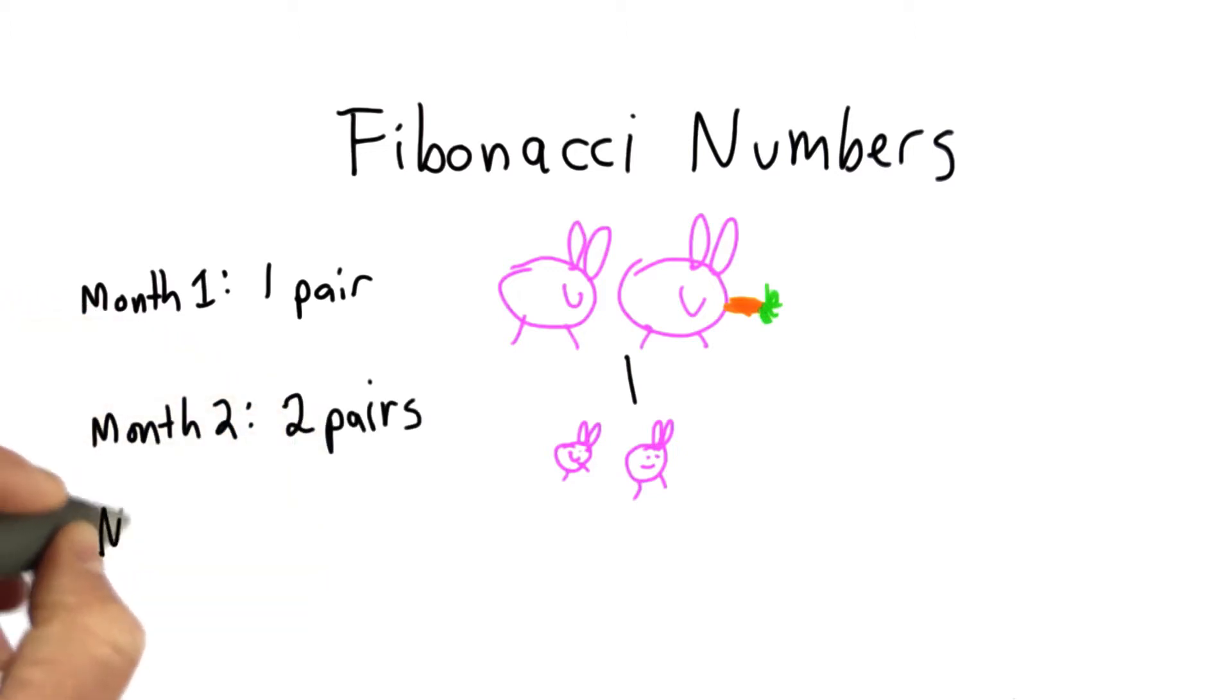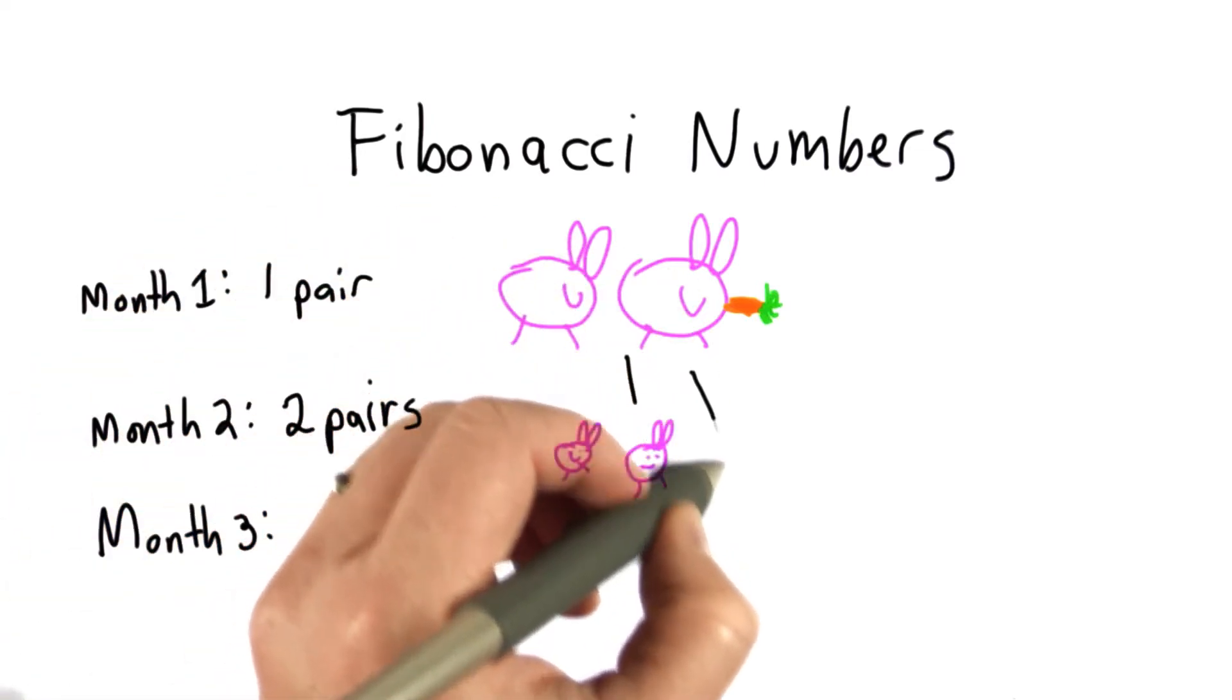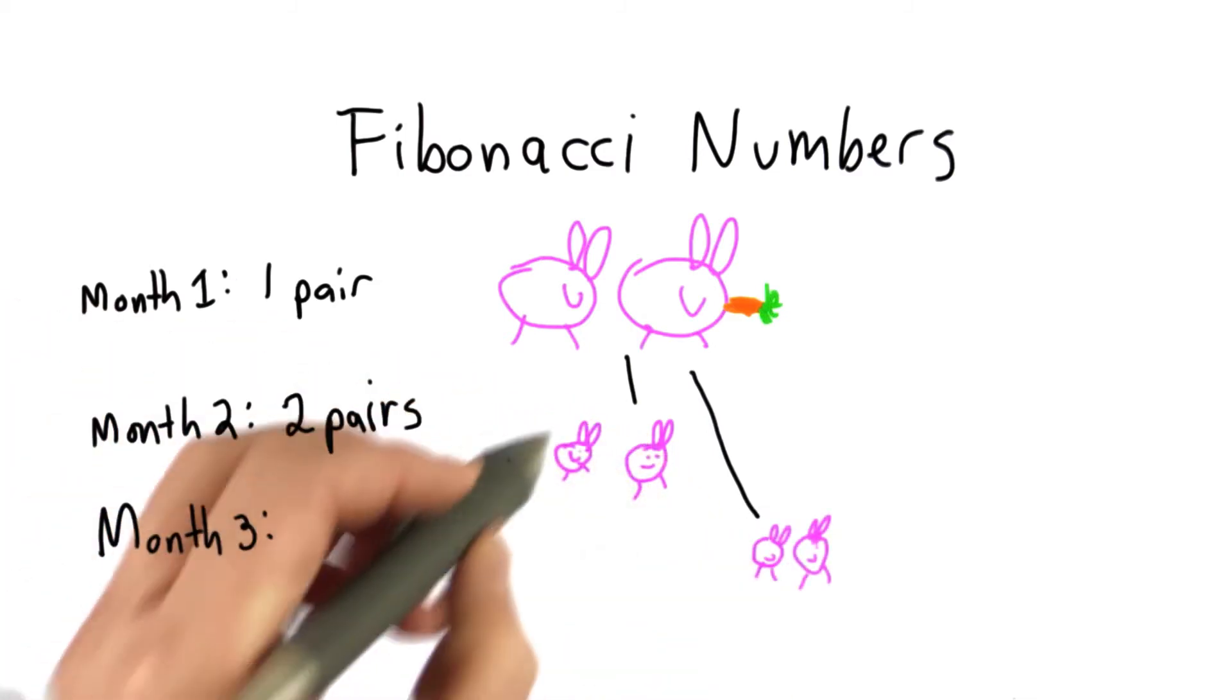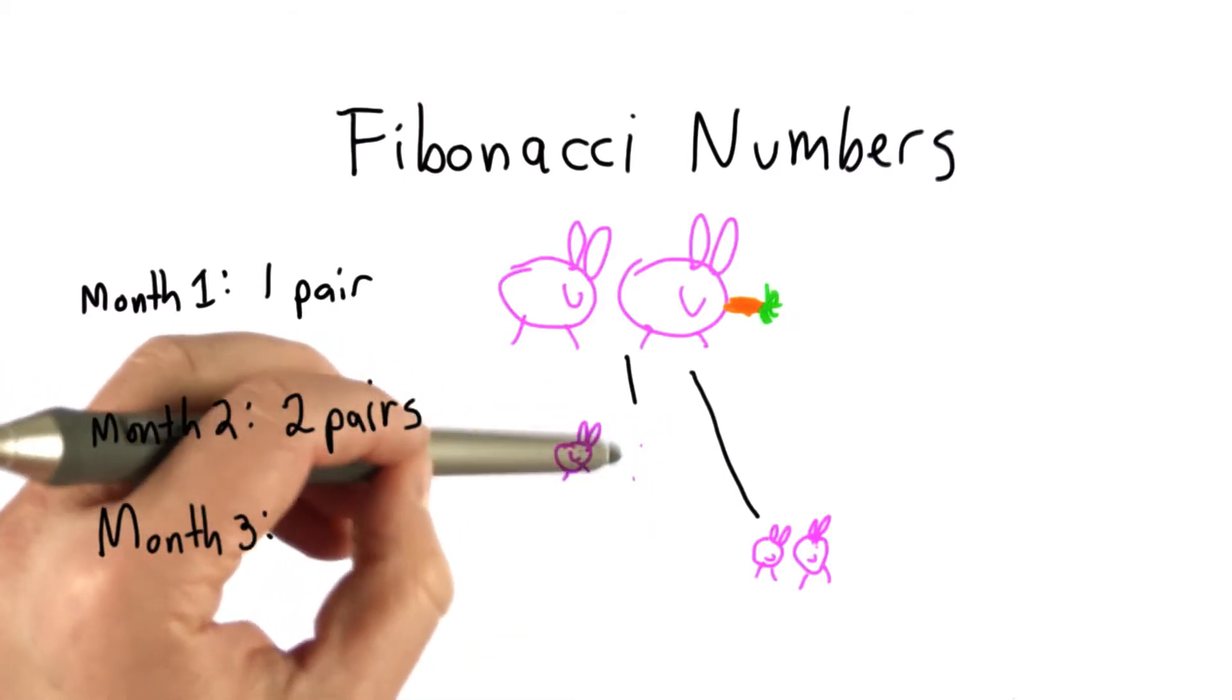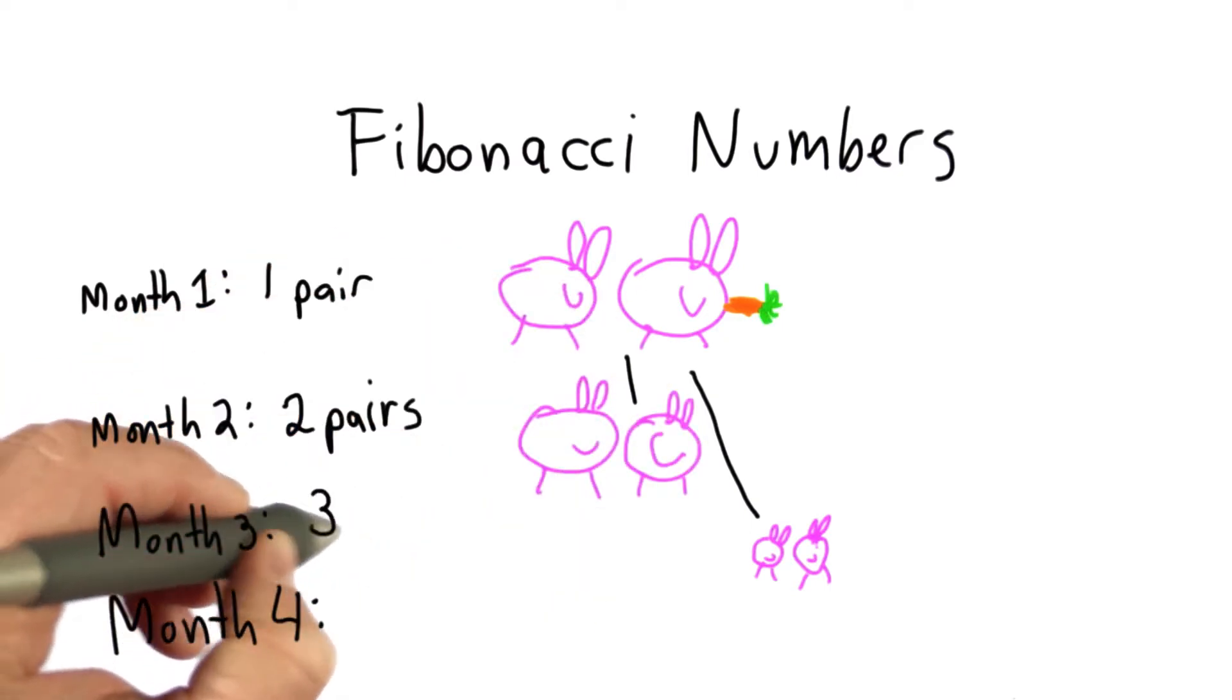Now at month three, the baby rabbits aren't yet ready to produce offspring. It takes a month for the rabbits to reach maturity. But these two will produce new offspring each month, so we have one new pair of baby rabbits. The rabbits that were born in month two have had a month to get bigger, so now they're mature rabbits. We have three pairs at the end of month three.